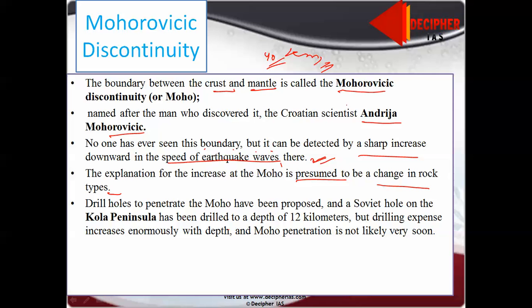This has been presumed to be due to change in rock types. Crust mainly comprises silica and oxygen. In the mantle, properties change to silicates and oxides of iron and magnesium. The deepest we have dug is in Kola Peninsula, 12 kilometers, then they closed this hole. This is near Scandinavian countries like Sweden.